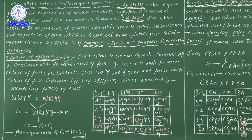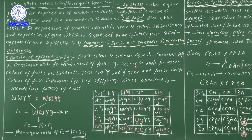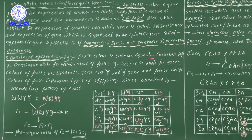First, let us study dominant epistasis. This kind of dominant epistasis can be seen in fruit color in Summer squash, common name Cucurbita pepo. So for that plant, fruit color is what we'll examine.